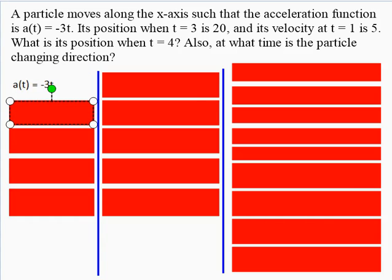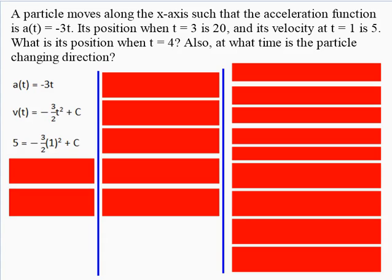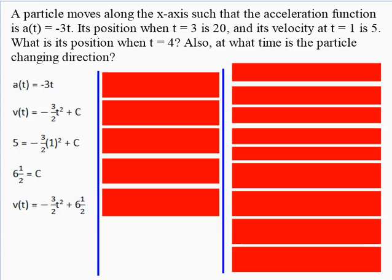Starting with a(t) = -3t, we integrate to find the velocity: v(t) = -(3/2)t² + C. We're told v(1) = 5, so we plug 5 in for velocity and 1 in for t, then solve for C. Adding (3/2) to both sides gives us C = 6.5. Putting it back into the velocity function, we have v(t) = -(3/2)t² + (13/2).